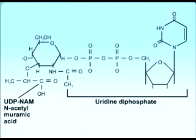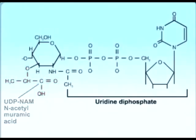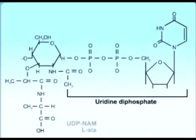The precursor subunit of peptidoglycan, UDP-N-acetylmuramic acid, is synthesized in the cytoplasm. A lactyl group is added to carbon number 3 of UDP-N-acetylglucosamine to form UDP-N-acetylmuramic acid. Five amino acids are added sequentially to UDP-NAM to form a pentapeptide side chain.